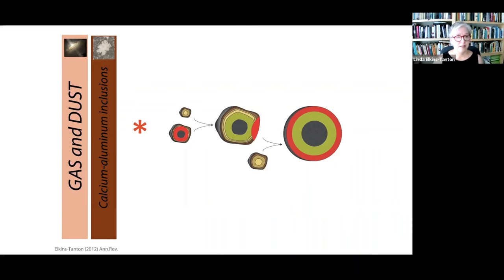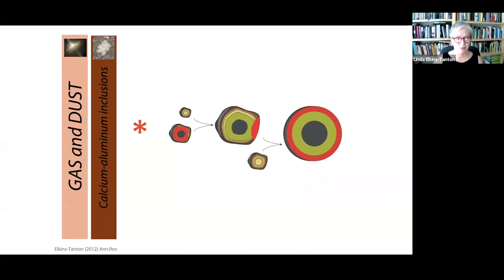The first mystery is: how do planetesimals form? How do you get dust and tiny pebbles to stick together into something the size of Massachusetts? And the other question is: how are the planets built so quickly? They have to be built very, very fast while the gas and dust disk still exists. Those are the two mysteries inhabited in that asterisk.